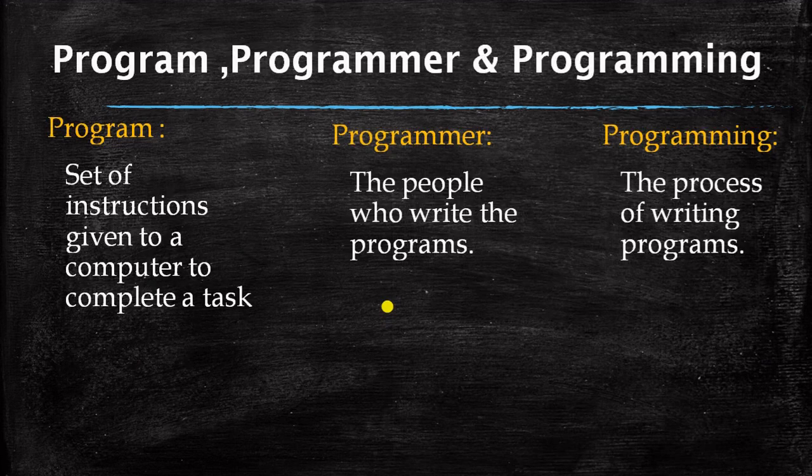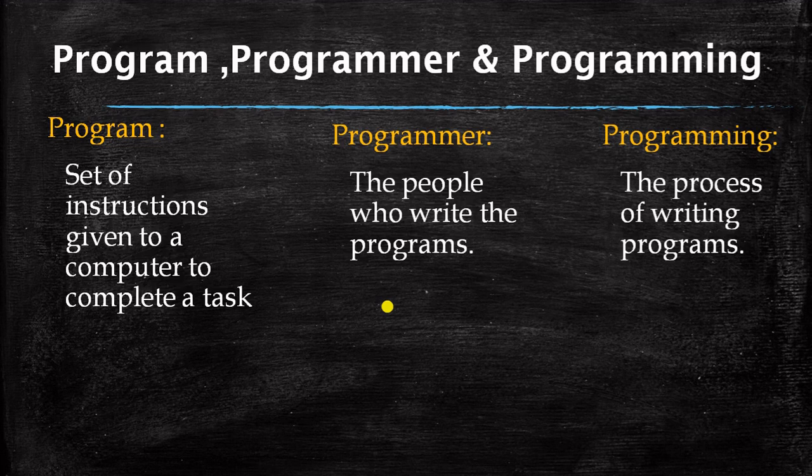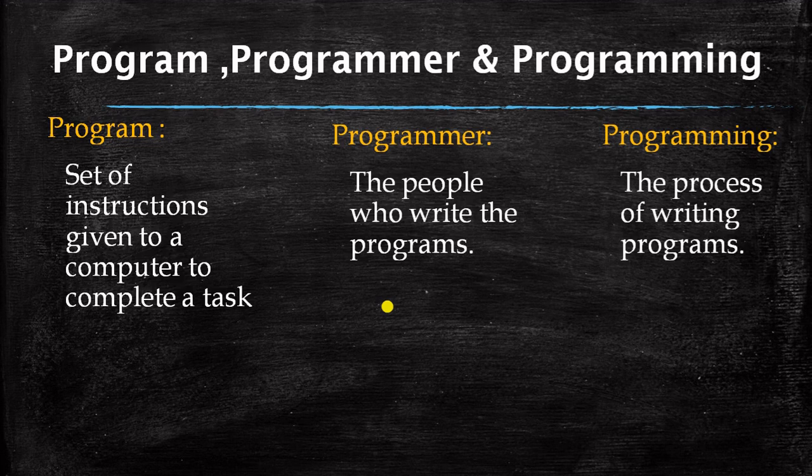Now three different terms we have over here. What is a program? What is a programmer and programming? A program is a set of instruction given to a computer to complete a task. It's just kind of instructions which is being provided to the computer to complete certain particular task. Now it can be anything. It can be addition. It can be subtraction. It can be playing a song. It can be playing a movie. So the set of instructions which has designed for particular thing, that is program.